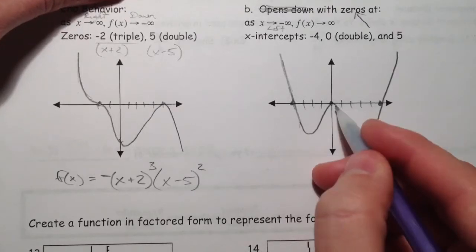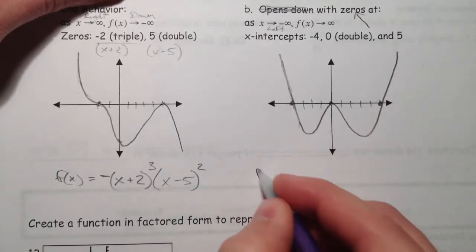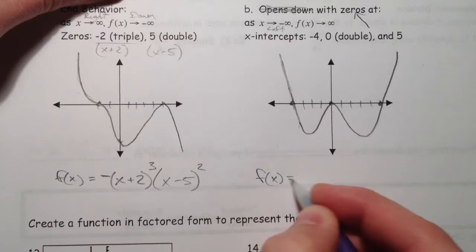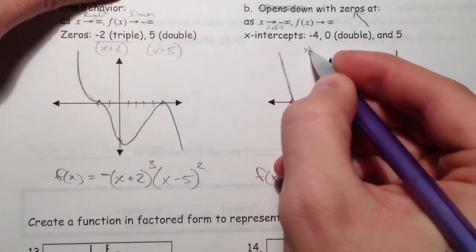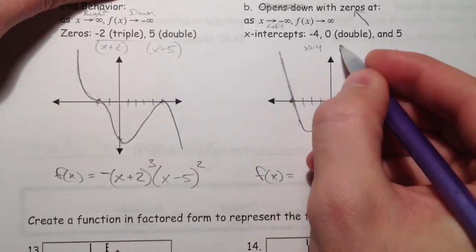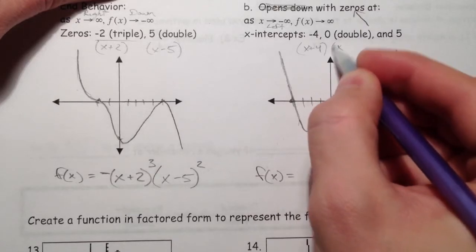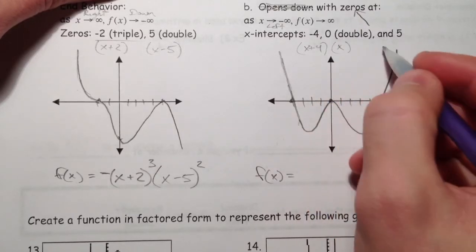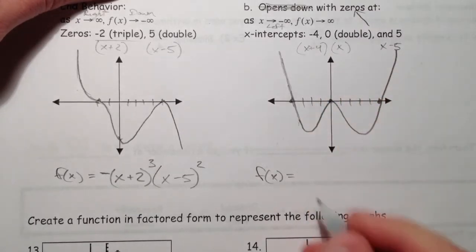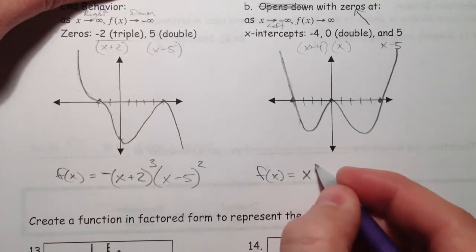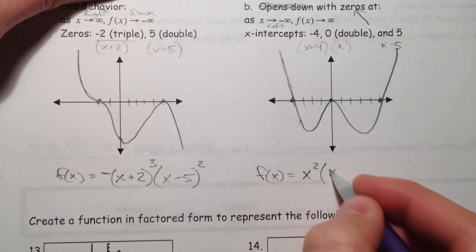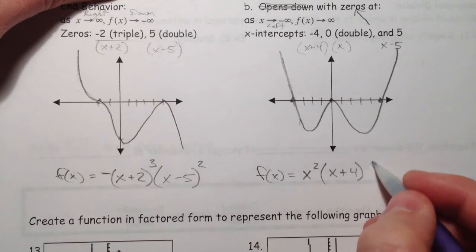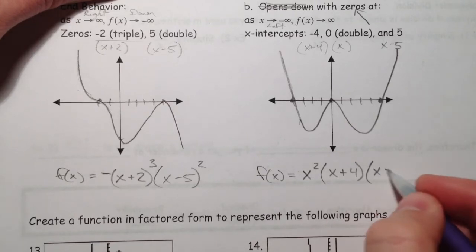You can make this one go down a little further because there's a little bit more space there. So f(x). This is x plus 4. This is just a factor of x, or x minus 0 and x minus 5. And so I'm going to write x first, and then it's double root. x plus 4 and x minus 5.